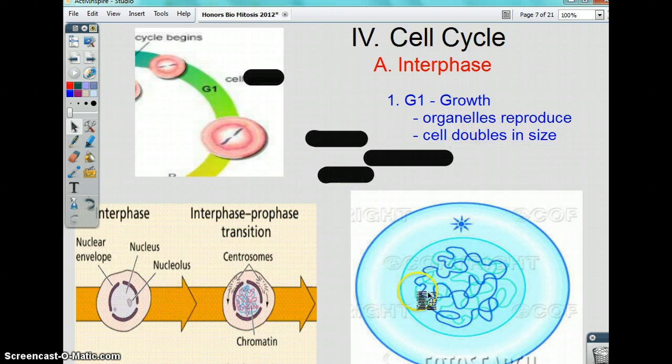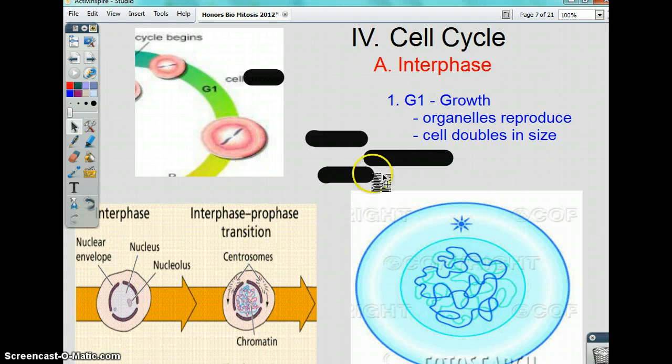Organelles are reproduced inside the cell. So you're going to have reproduction of mitochondria, reproduction of ER, whatever it is. So the cell has to grow in order to accommodate all those organelles.